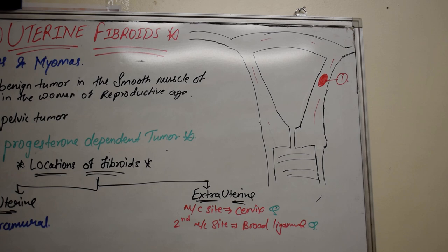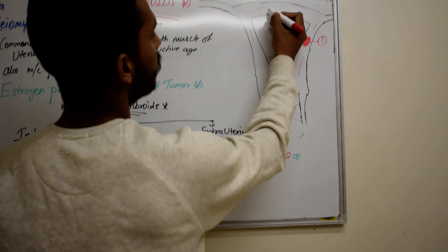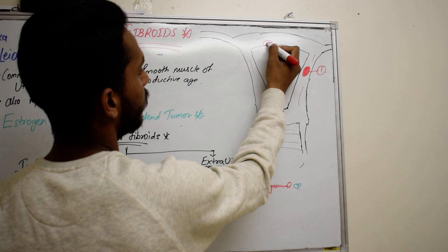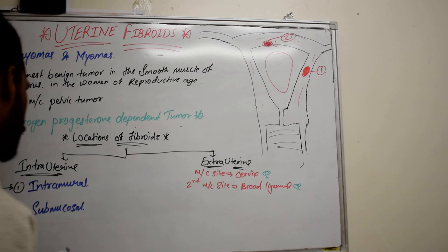The second type is submucosal. Suppose there is a fibroid which is going inwards towards the uterine cavity — we call it a submucosal fibroid.